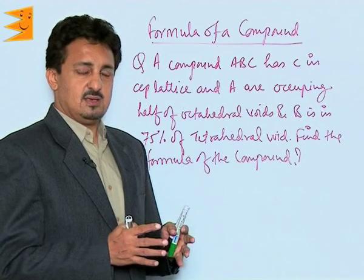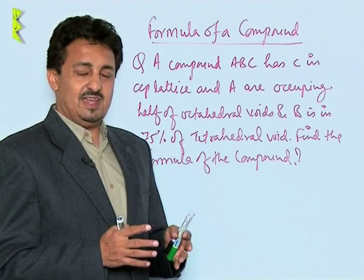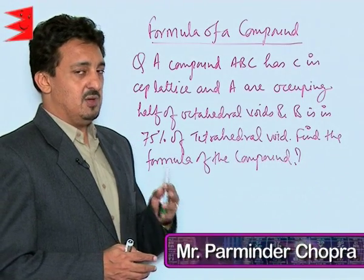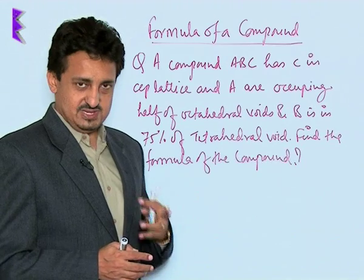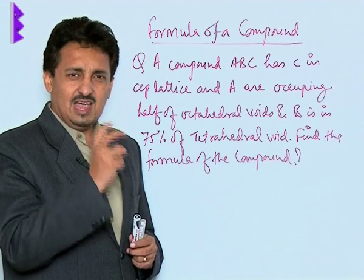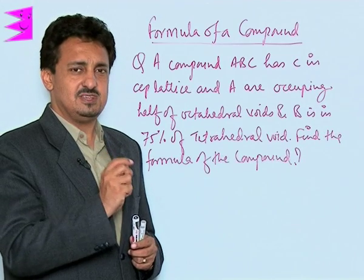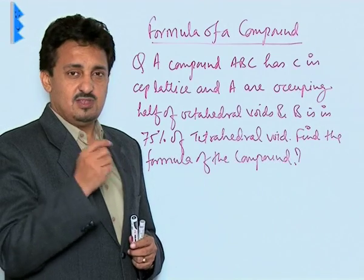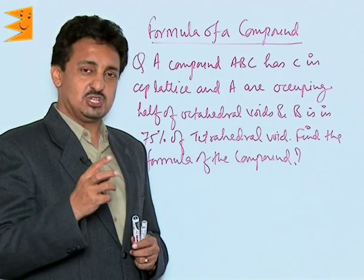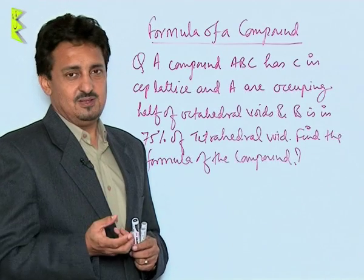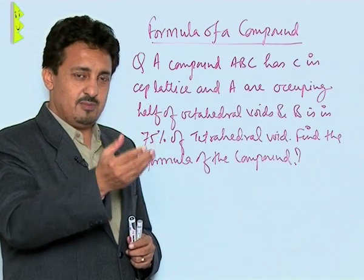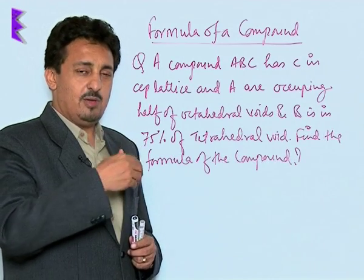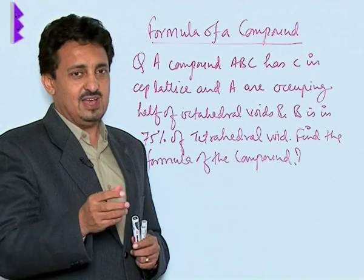After understanding the basic arrangement in which the particles are arranged in different crystalline solids and the different types of unit cells, let us now find out what exactly the formula of a compound is. The formula of ionic compounds is the simplest representation of the ratio of the atoms of different elements present at different locations in the unit cell — how many are in octahedral voids, how many are in tetrahedral voids, how many are at face centers or body diagonals, etc.